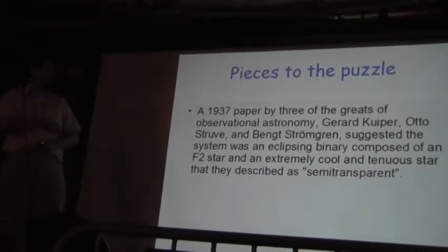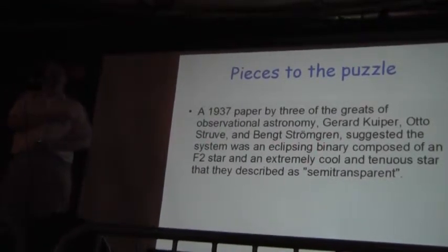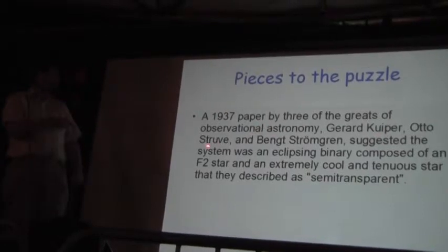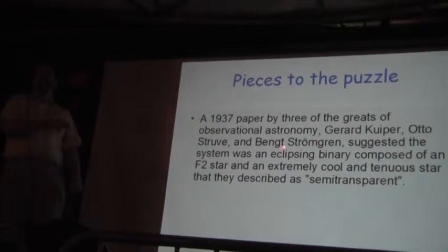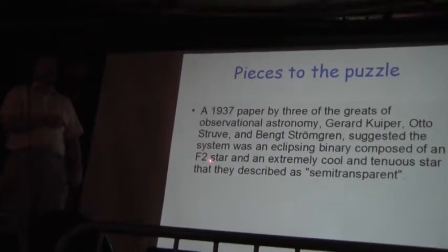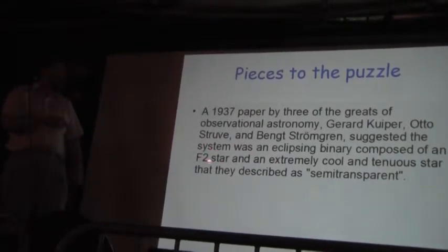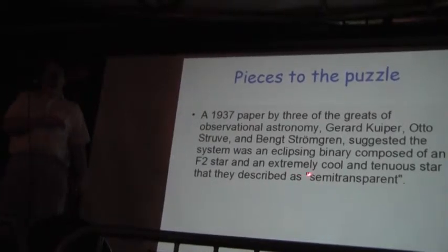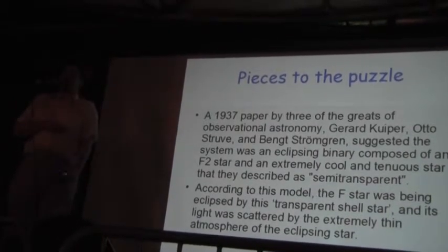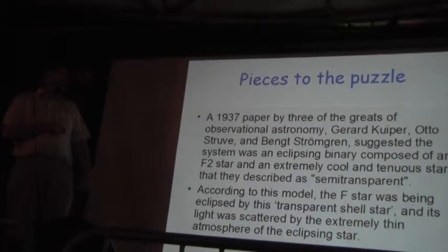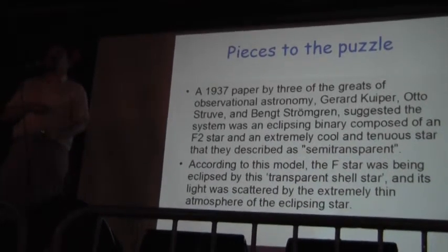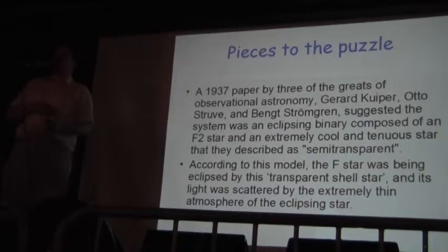So, the first theory published was by Kuiper, Struve, and Strömgren. And anybody who's taken astronomy will know those names. Kuiper, Kuiper Belt, Struve, Strömgren. They worked a lot on planetary nebulae. They suggested that it was an F2 star. See, the classification's already changed. And that there's a semi-transparent, super-stellar shell. That's like a shell material that doesn't emit its own light, but somehow absorbs light. This idea held sway for a while. They thought it was an atmosphere of a very small star. Some people even put it down to being an early example of a black hole.